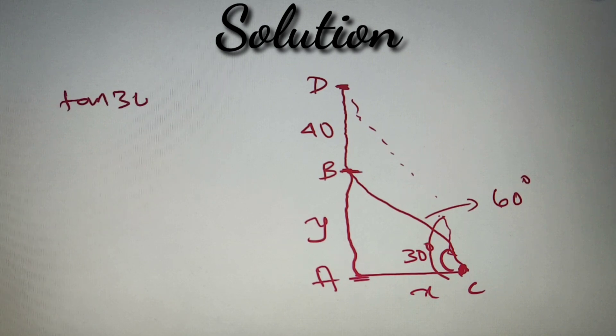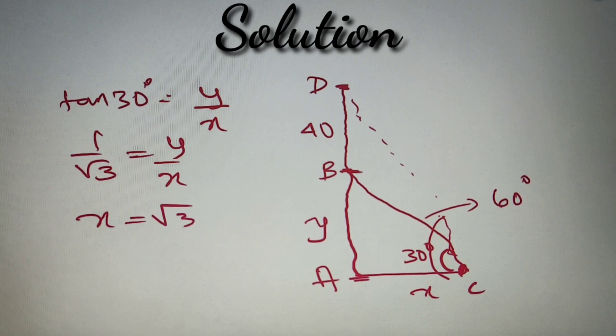we can say that tan 30 degrees is equal to y by x because y is the perpendicular and x is the base. So we have got tan 30 is equal to y by x, or we can say that 1 by root 3 is equal to y by x, or we will get a relation in x and y that is x is equal to root 3y.